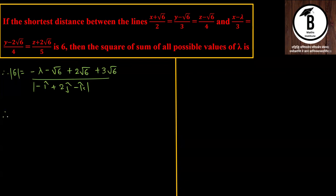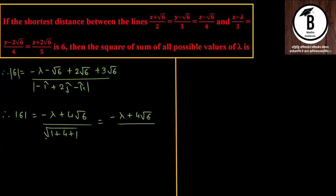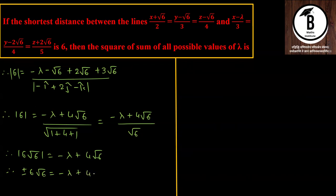Setting up the equation with SD = 6: the numerator is |−λ + 4√6| (combining terms: −λ − √6 + 3√6 + 2√6 = −λ + 4√6), divided by √6. Both sides multiplied by √6 gives mode 6. So: |−λ + 4√6| = ±6√6, meaning −λ + 4√6 = ±6√6.